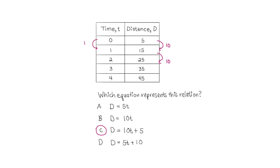It's not direct variation, so we can eliminate any options without an initial value. And since only one option shows the initial value of five, you could identify the answer just from that alone.